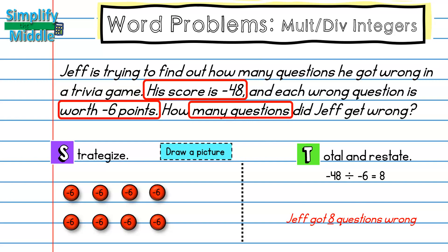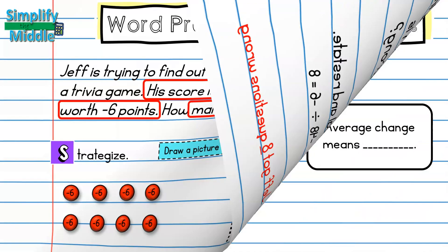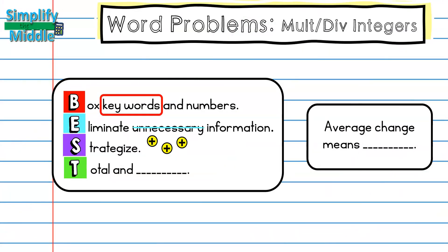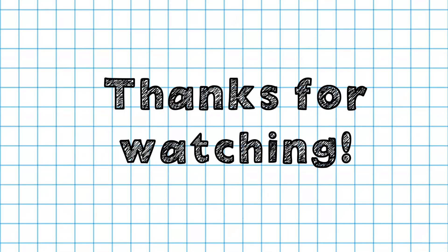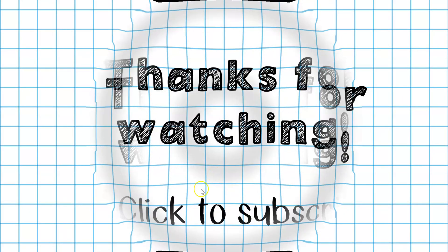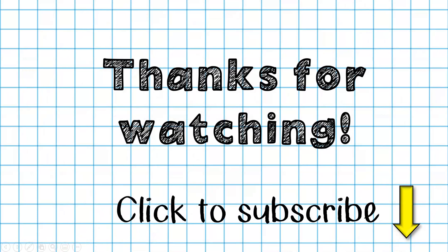Let's recap. When using the BEST method: box keywords and numbers, eliminate unnecessary information, strategize, then find the total and restate. I also learned in this lesson that 'average change' means division. That wraps up our lesson — thanks for tuning in, and feel free to subscribe for this and other lessons!